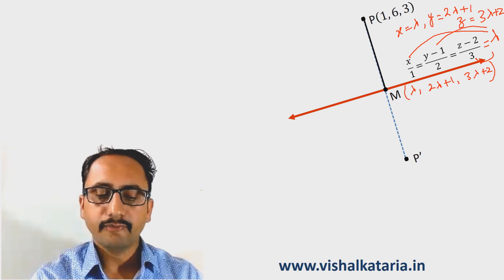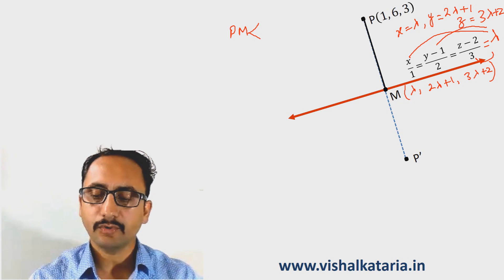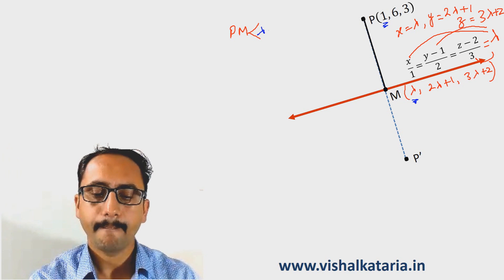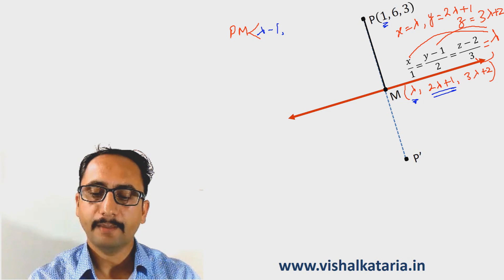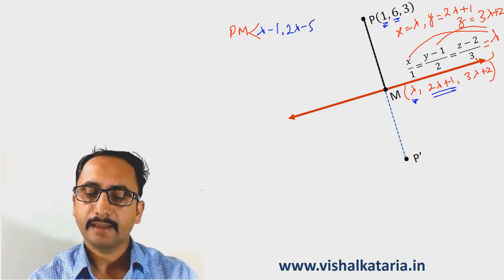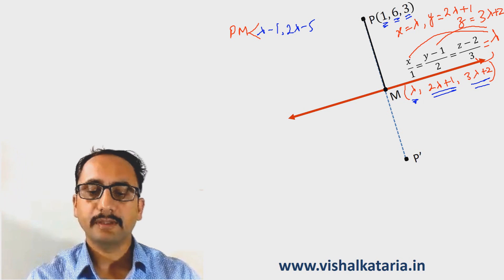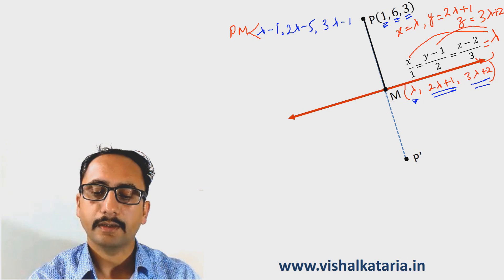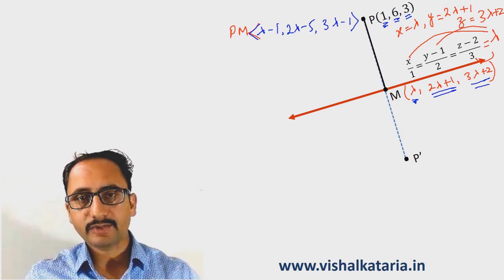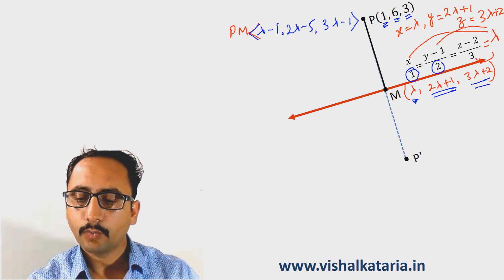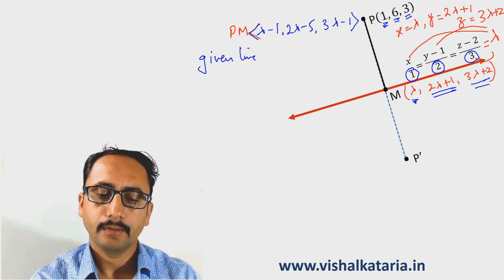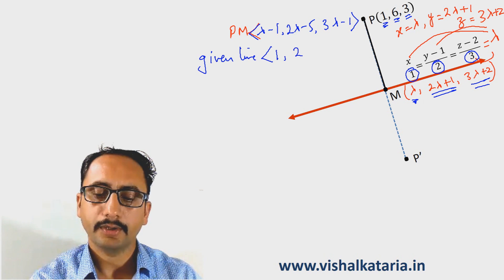Now let's find the direction ratios (DRs) of the line passing through PM. We subtract the coordinates: lambda minus 1, 2 lambda plus 1 minus 6 which equals 2 lambda minus 5, and 3 lambda plus 2 minus 3 which equals 3 lambda minus 1. These are the DRs of line PM. We also have the DRs of the given line, which are 1, 2, 3.